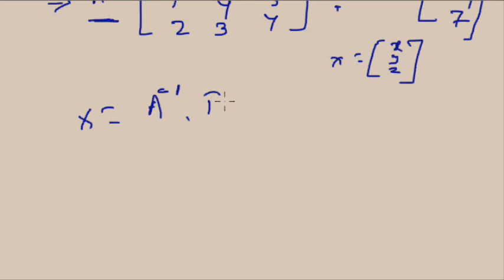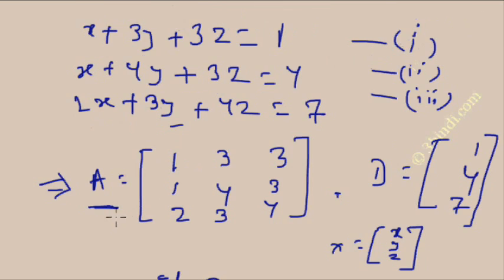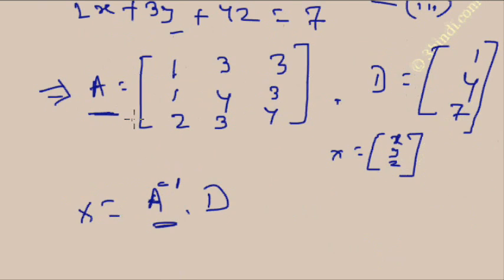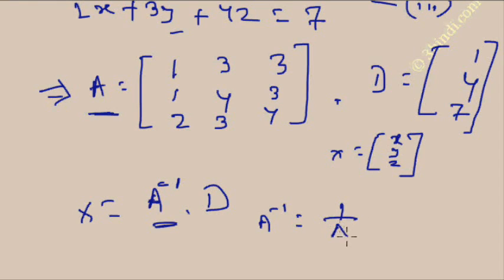We know X = A inverse times D, so we need to find A inverse. A inverse equals 1 over delta times the adjoint of A, where A is the coefficient matrix we just formed.